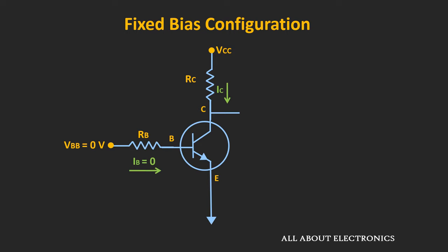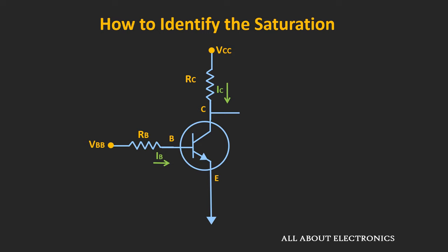However, when the voltage VBB is non-zero, then what we cannot make out immediately is whether the BJT is operating in the active or the saturation region. Now whenever the BJT operates in the saturation, then the voltage Vce is very low, and typically it is in the range of 0.1 to 0.2V. But for simplicity, we will assume that in saturation, the voltage Vce is equal to 0V.